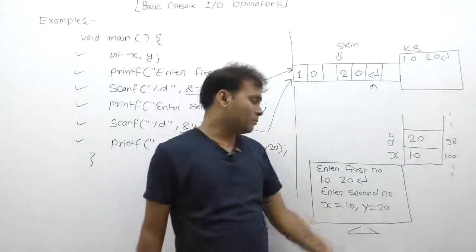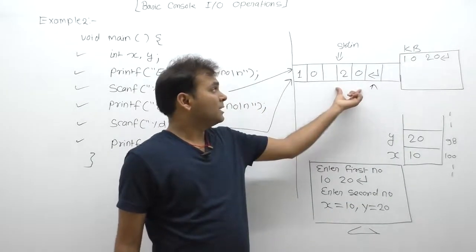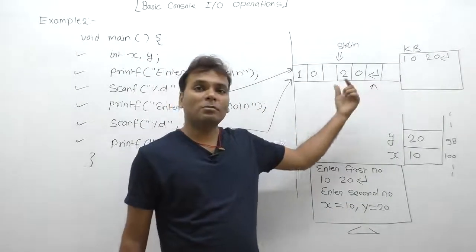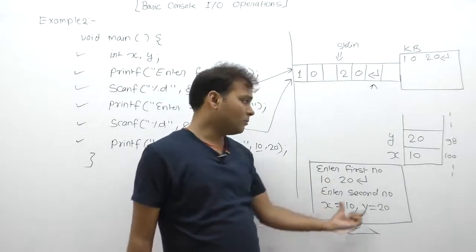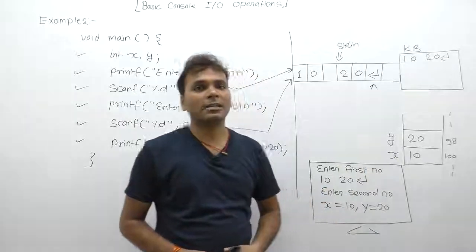Therefore second time me it read kar gaya already existing input data. Therefore it doesn't wait for another input, it will directly read existing character from standard input buffer as stdin. Therefore this is the final view of output device monitor regarding this example.